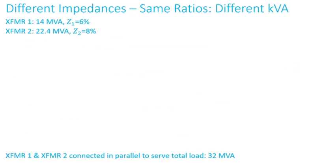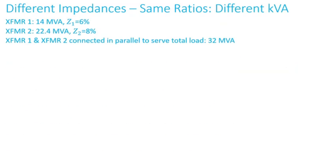Now we'll do the case where we still have different impedances and same ratio, but now different MVA ratings. Transformer one has a rating of 14 MVA with six percent impedance. Transformer two has a rating of 22.4 MVA with eight percent impedance. Both are connected in parallel to serve a load of 32 MVA.